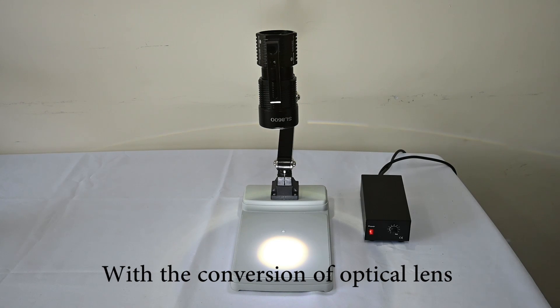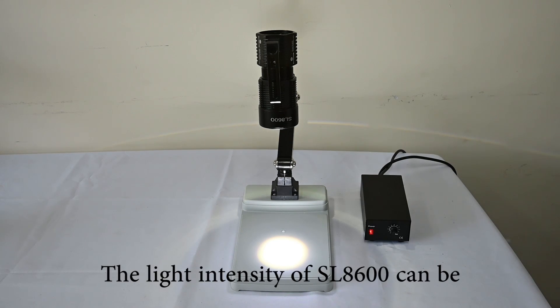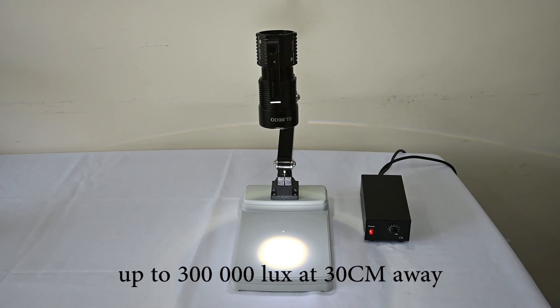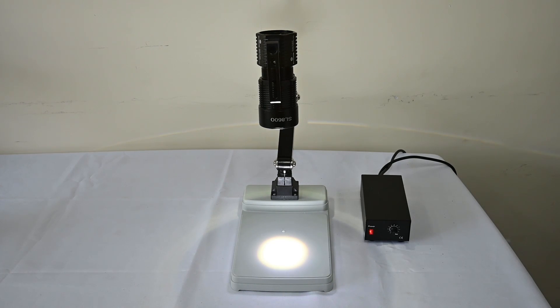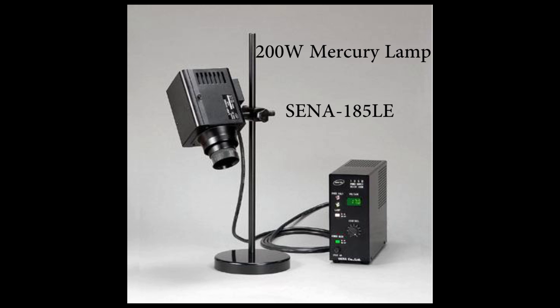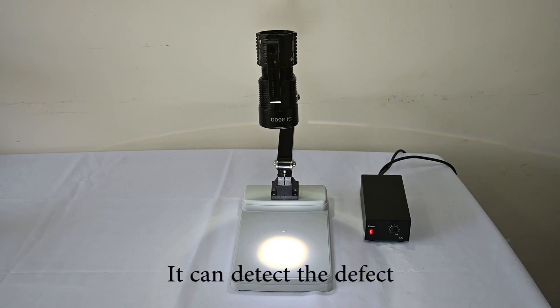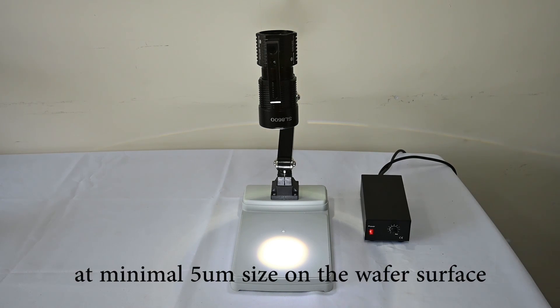With the conversion of optical lens, the light intensity of SL-8600 could be 300,000 lux at 30 centimeters away, which is equivalent to the 200W mercury lamp. It can detect the defect at a minimum of 5 micron size on the wafer surface.